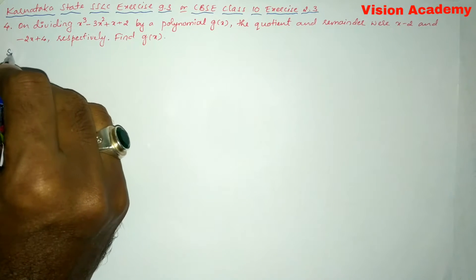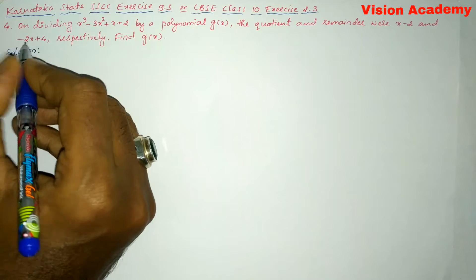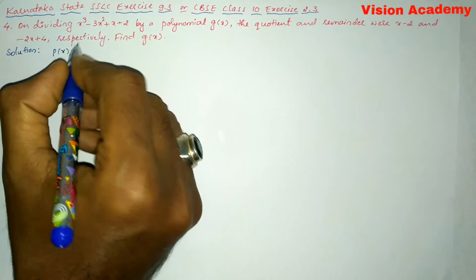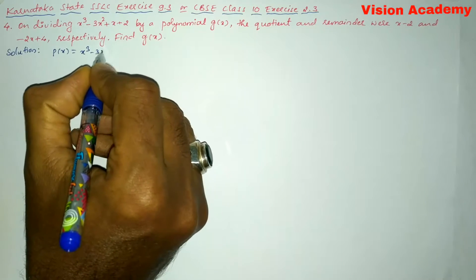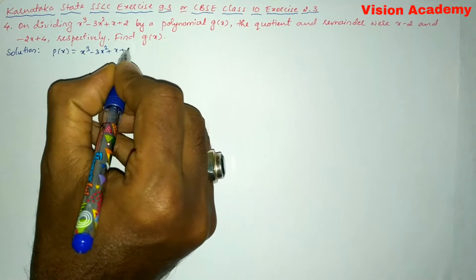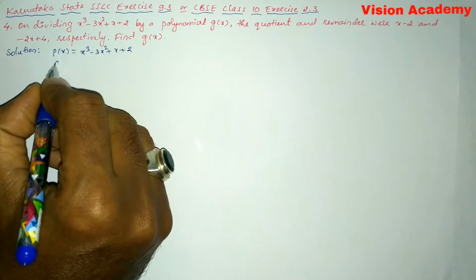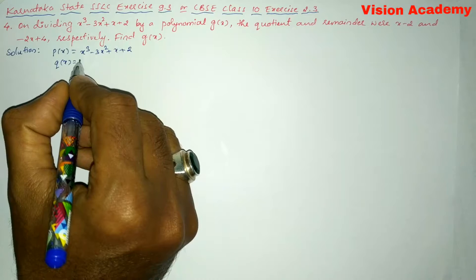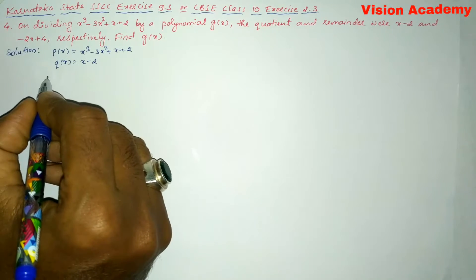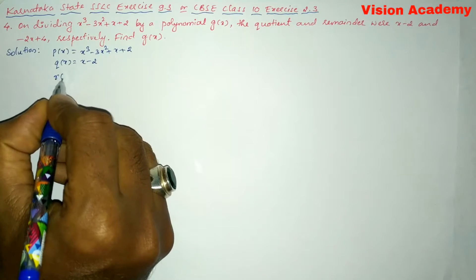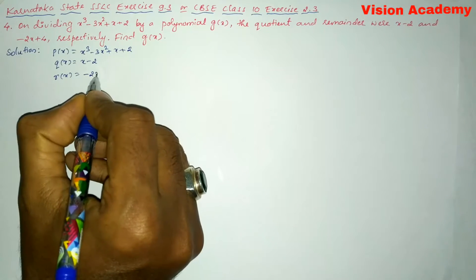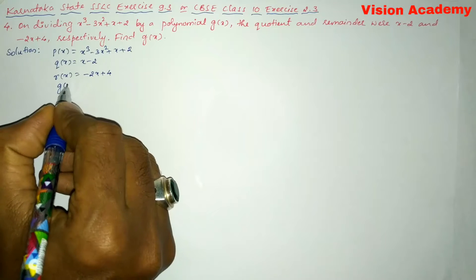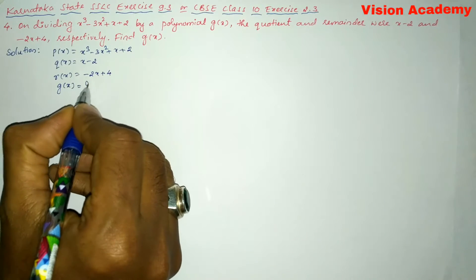Let us find the solution for the given problem. Here first they have given P(x), that is the polynomial which is x³ minus 3x² plus x plus 2. Next it is given that quotient q(x) is equal to x minus 2, and the remainder r(x) is equal to minus 2x plus 4. We need to find the value of g(x).